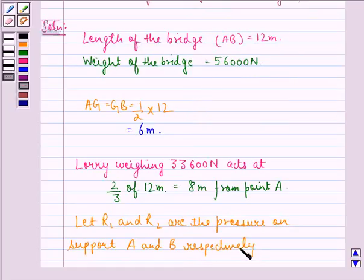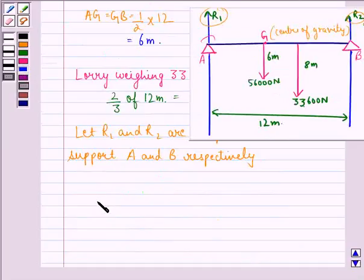Then R1 plus R2 equals 56,000 Newton plus 33,600 Newton, which equals 89,600 Newton.